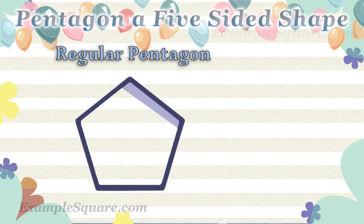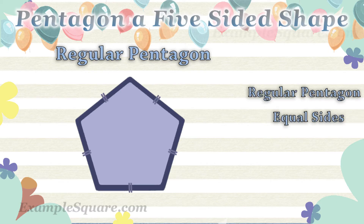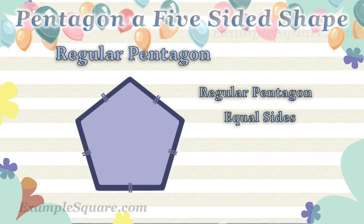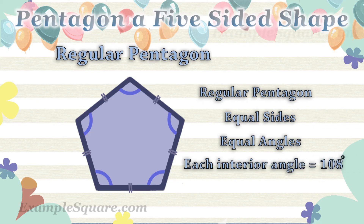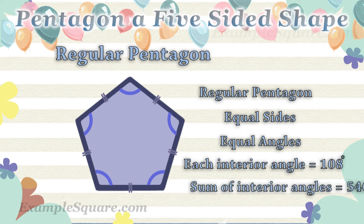This is an example of a regular pentagon. All the sides of a regular pentagon are equal and all interior angles are also equal. A regular pentagon has five equal interior angles, and each of the interior angles of a regular pentagon equals 108 degrees. The sum of all the interior angles of a regular pentagon is 540 degrees.